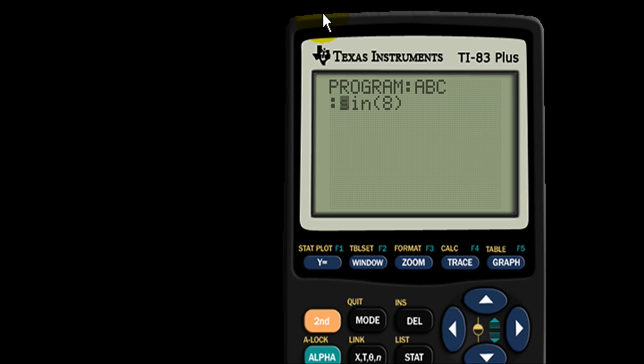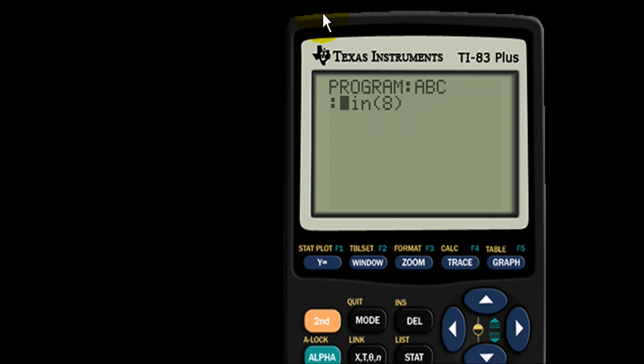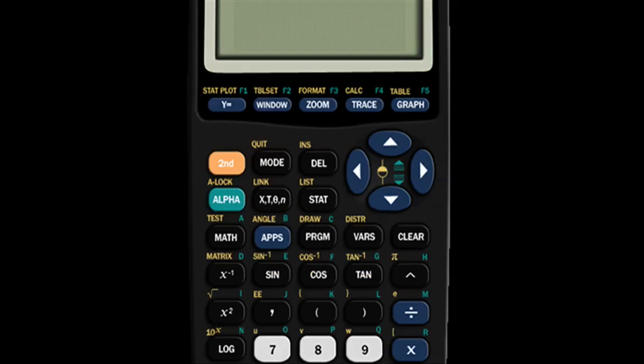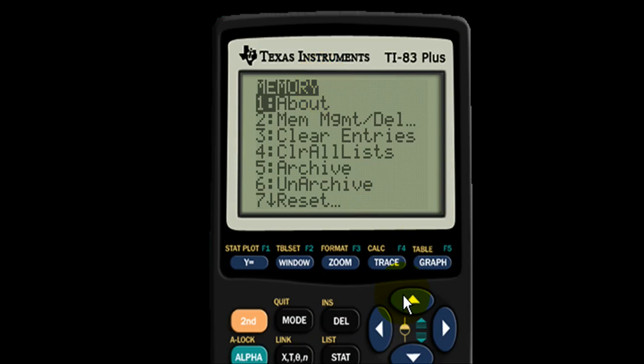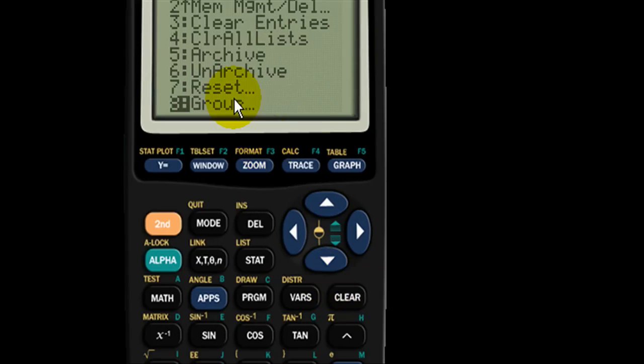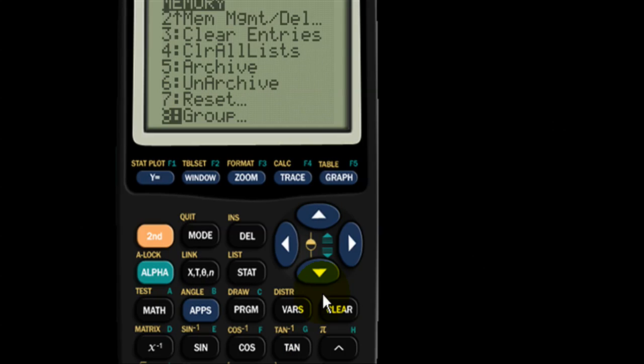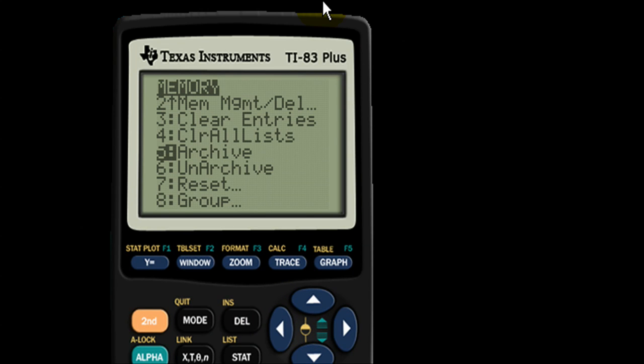So that's basically it. It's a great trick. There's also another way to do it by grouping but I think archiving it is easier because to go to the archive button it's much faster than to go to the group button. The group button is number eight, archive is five. So it saves time there by two seconds or something but this is basically how you can store information on your calculator and still have the information after you delete the RAM.